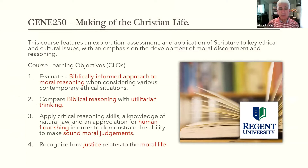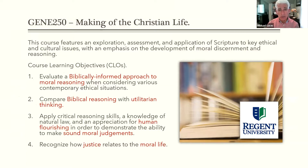This course features an exploration, assessment, and application of scripture to key ethical and cultural issues, with an emphasis on the development of moral discernment and reasoning. In short, we're going to look at what is right and what is wrong, how we determine that, and compare and contrast it with a variety of philosophies and worldviews concerning the purpose, meaning, and ability in life to thrive or flourish. This course is all about fulfilling the purpose for which we exist, and integral to that is knowing our identity and the ability to discern what is morally right and wrong and how to make good decisions so that we can build and maintain a life that thrives and flourishes.